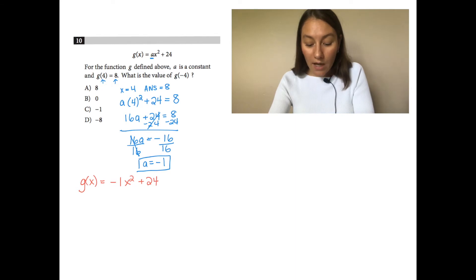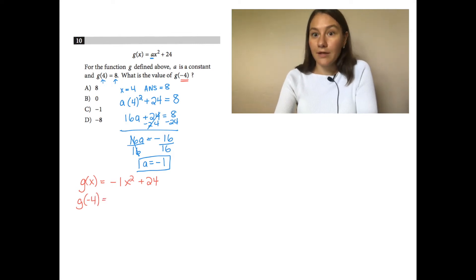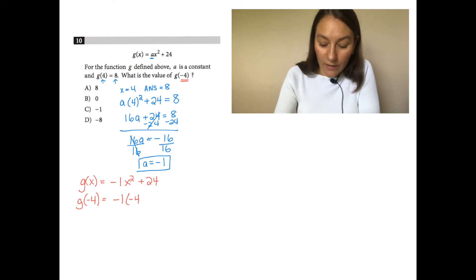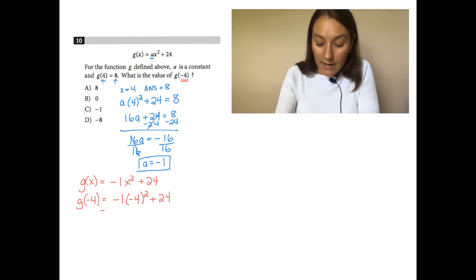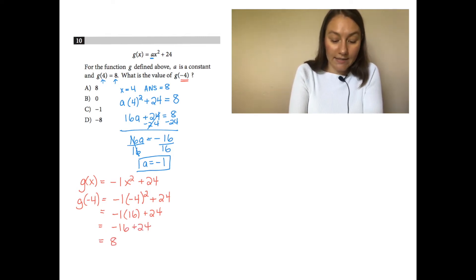Now they're asking for g of negative 4. Plug in negative 4 carefully with parentheses: negative 1 times negative 4 squared plus 24. Negative 4 squared is 16, so we get negative 1 times 16 plus 24, which is negative 16 plus 24. So g of negative 4 equals 8. The answer is A.